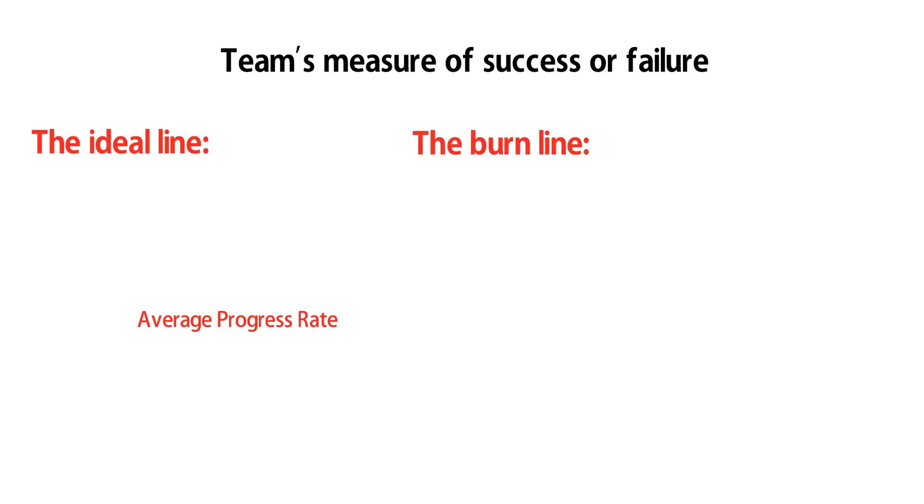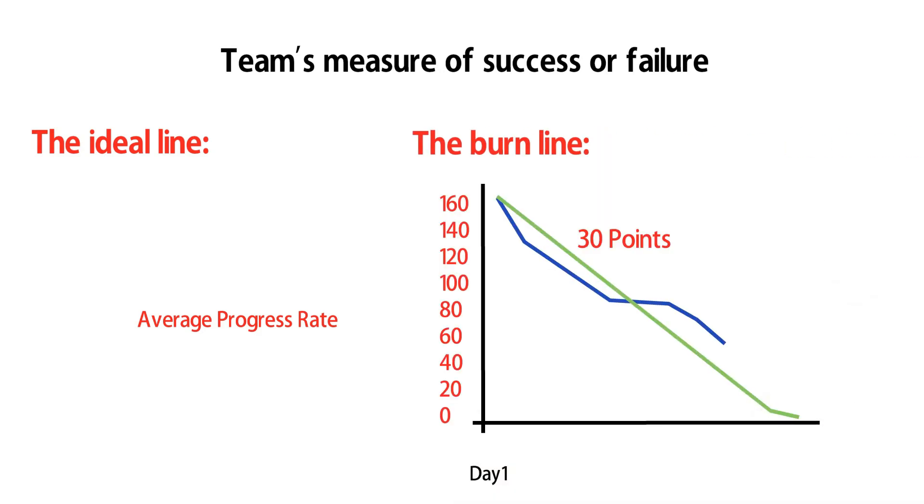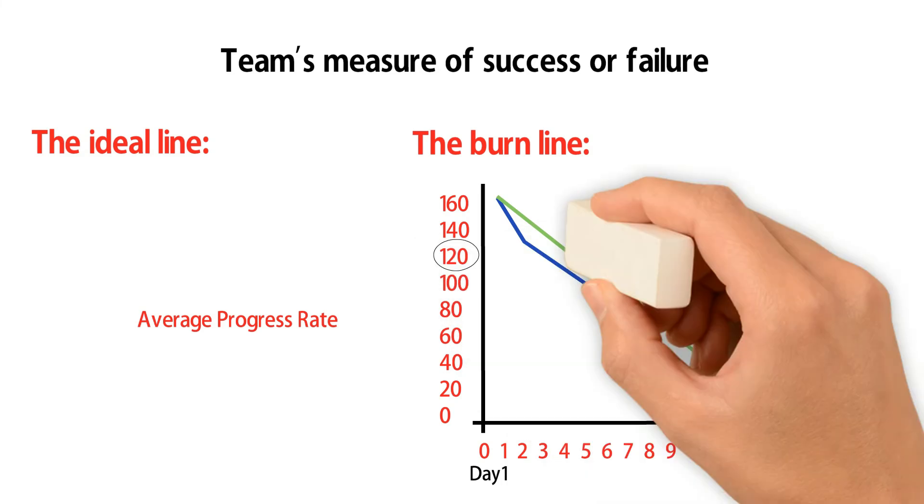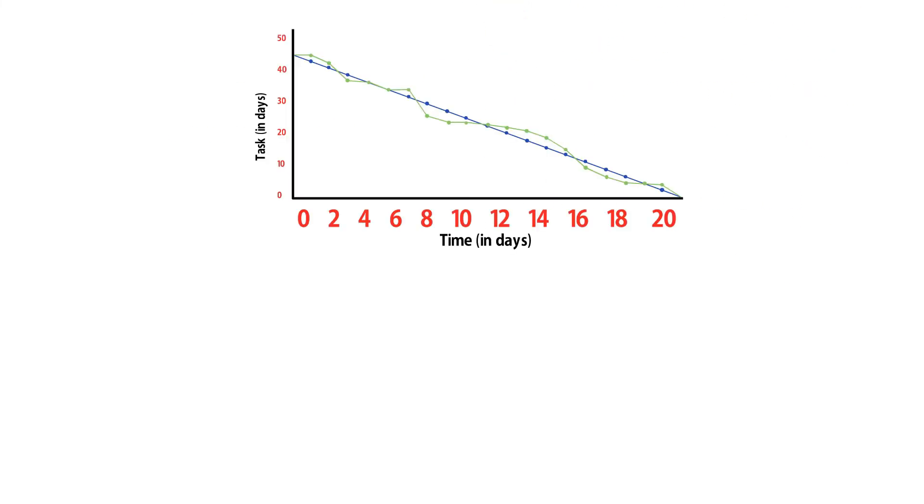The burn line tracks actual progress. 30 points of user stories completed on day 1 with 120 left undone. 40 user points completed after day 2, leaving 110 undone. You can figure out if the team is lagging behind or ahead by viewing the chart.